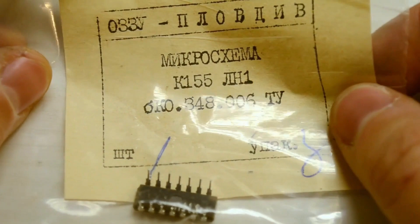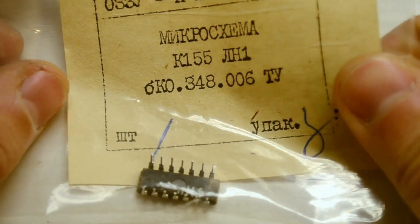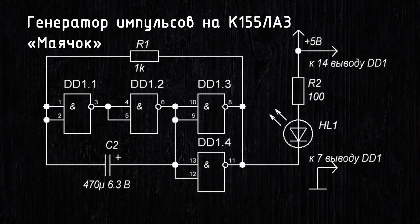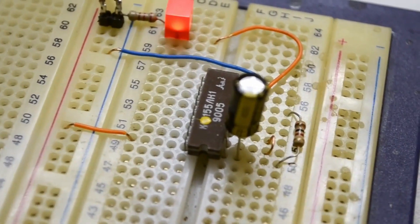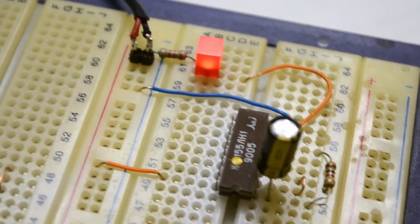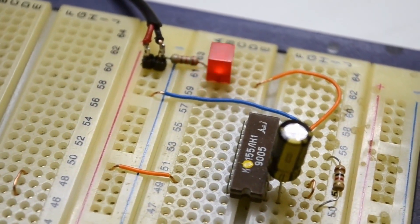In the previous video, we looked at and assembled three circuits on the INE LA3 microchip, and the first was an LED beacon. I explained the working principle of this circuit previously. So, if you haven't seen it, be sure to watch.